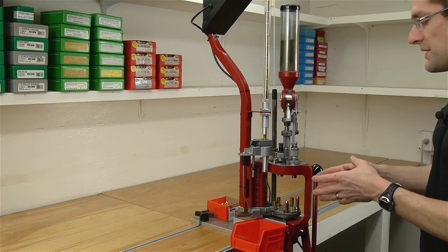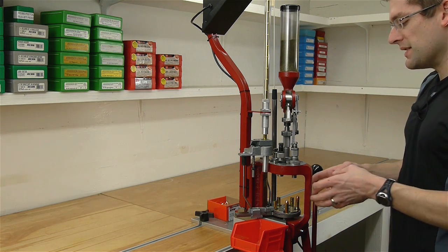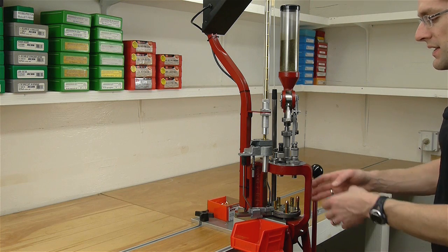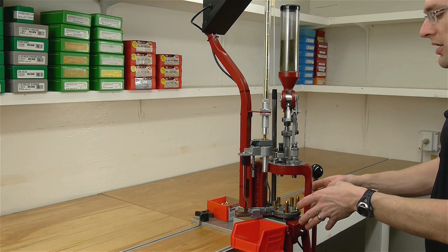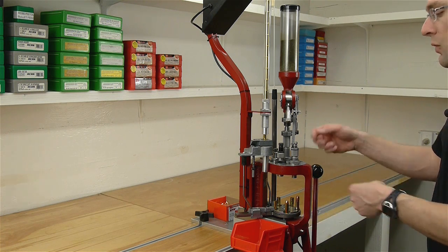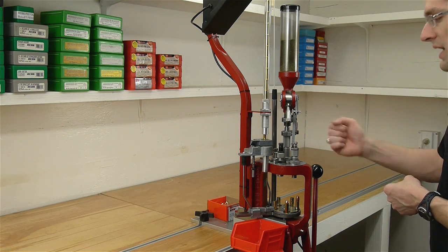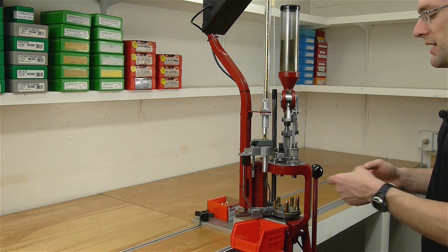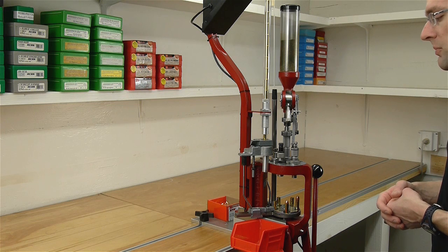Being a progressive press means that it has multiple die stations that are simultaneously acting on the cartridges being loaded when we pull the handle. So every time we pull the handle on this press we get a completed cartridge in the completed cartridge bin.